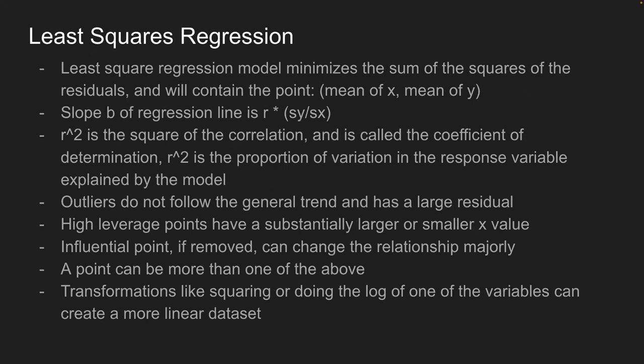Least squares regression minimizes the sum of the squares of the residuals and always contains the point (x-bar, y-bar). The slope b equals r times the standard deviation of y over the standard deviation of x. R-squared is the coefficient of determination — the proportion of variation in the response variable explained by the model. Outliers will not follow the general trend and will have a large residual. High leverage points have a substantially larger or smaller x value. An influential point, if removed, can change the relationship majorly. Finally, you can linearize data by transforming through squaring or taking the log of one of the variables.